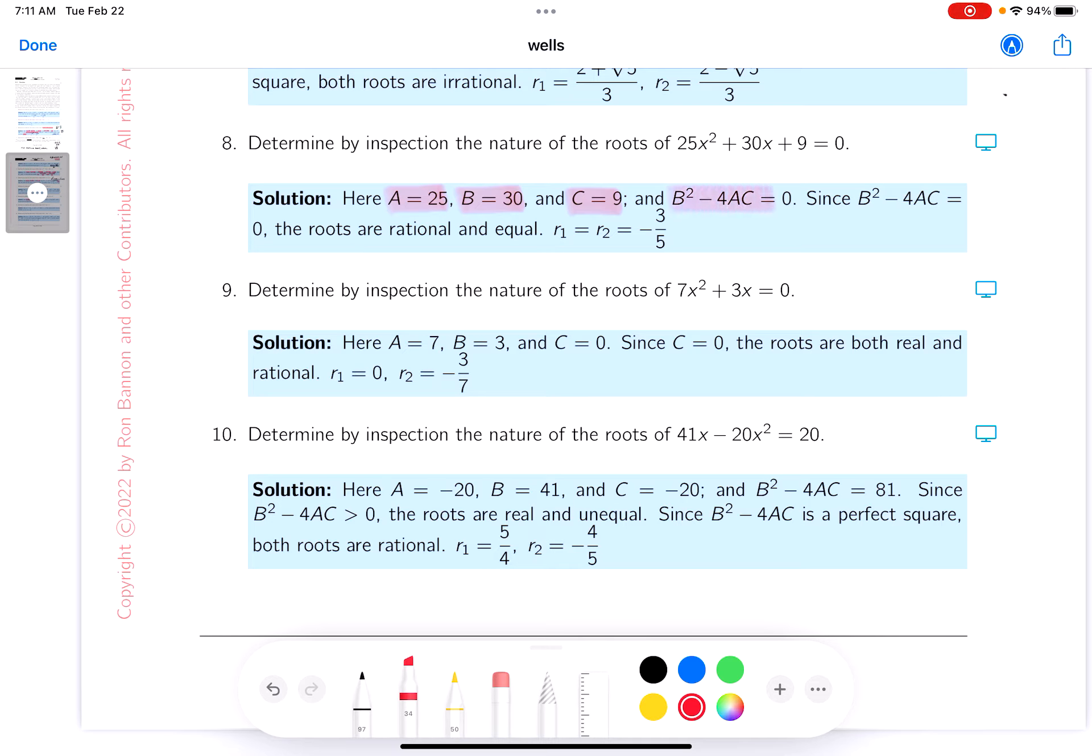And then when you compute this over here, which I recommend you do, you get 0. So what are we going to get? Well, we're going to get two rational roots.